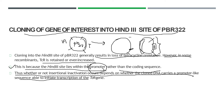Whether or not insertion inactivation occurs depends on whether the cloned DNA carries a promoter-like sequence able to initiate transcription of the tetracycline-resistant gene to form RNA. This is one of the most important reasons explaining the variable outcome at the HindIII site.